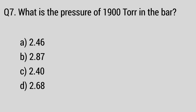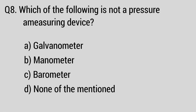Question number seven: What is the pressure of 19.4 in bar? The right answer is option C, 2.40. Question number eight: Which of the following is not a pressure measuring device? The right answer is option A.